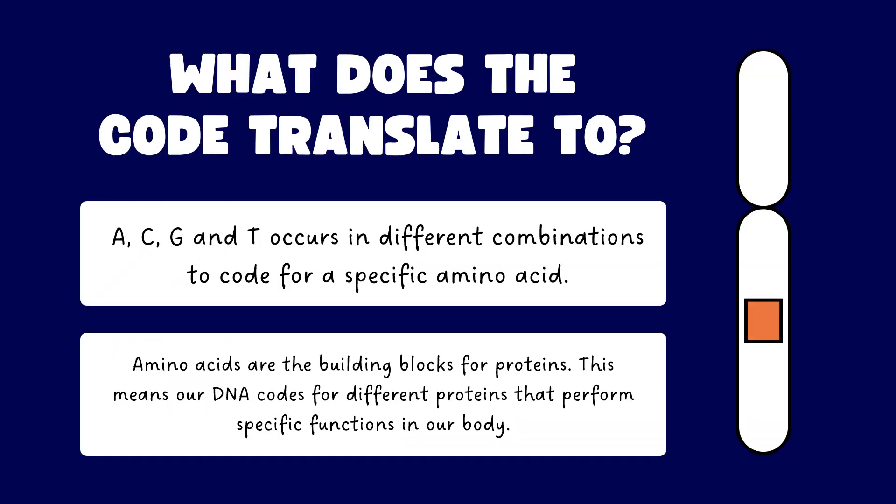What does the code translate to? A, C, G, and T occur in different combinations to code for a specific amino acid, and these amino acids are the building blocks for proteins. This means our DNA codes for different proteins that perform specific functions in our body.